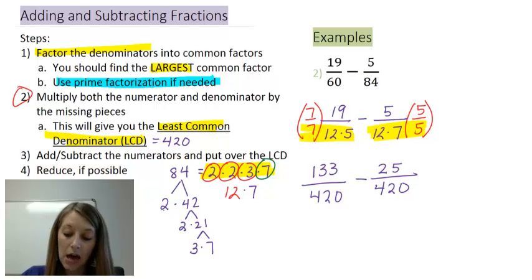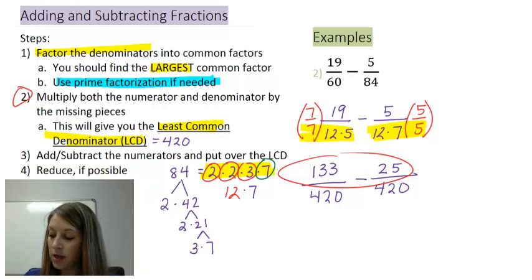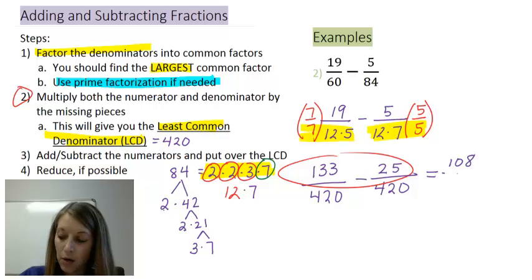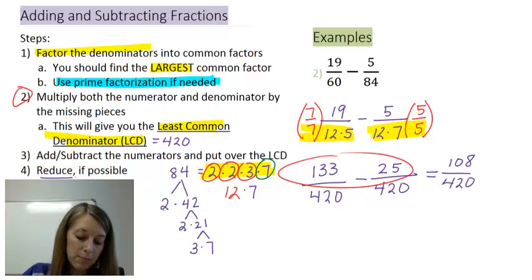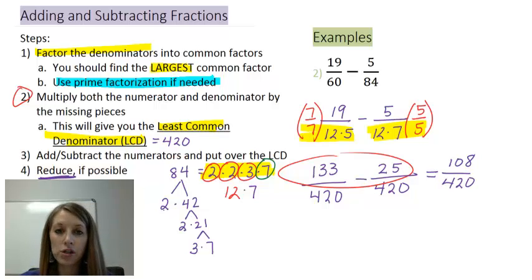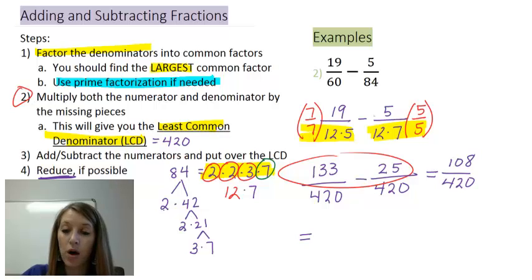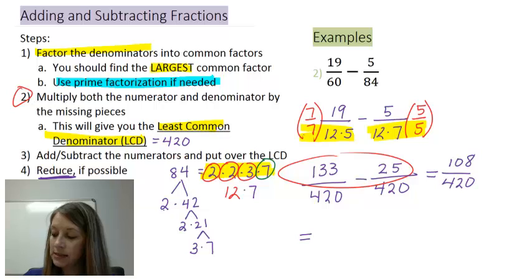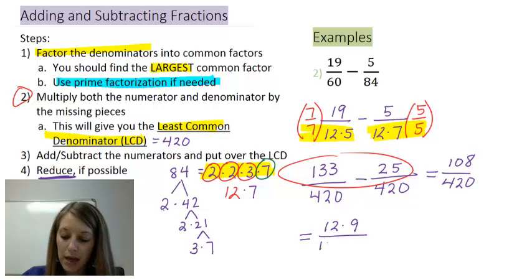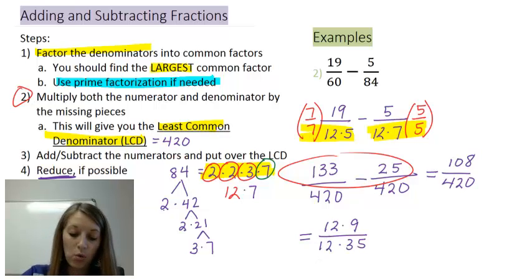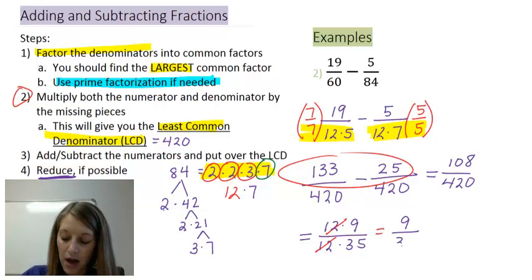Since the denominators match, I do what the numerators tell me: 133 minus 25 gives me 108, over the LCD of 420. For the last step I need to reduce. The largest common factor of 108 and 420 is 12. So I write 108 as 12 times 9, and 420 as 12 times 35. Canceling the 12s gives me my final answer: 9 over 35.